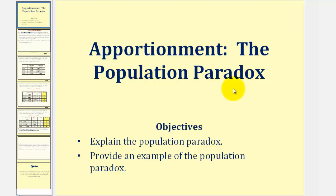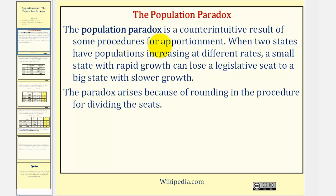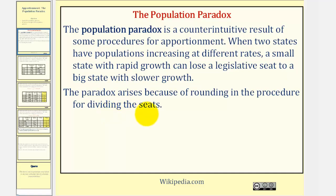Welcome to a lesson on the population paradox of apportionment. The population paradox is a counterintuitive result of some procedures for apportionment. When two states have populations increasing at different rates, a small state with rapid growth can lose a legislative seat to a big state with slower growth. The paradox arises because of rounding in the procedure for dividing the seats.